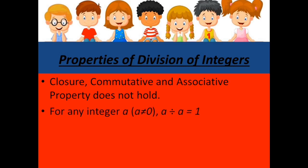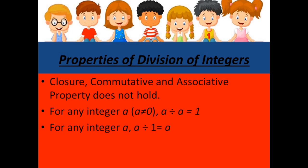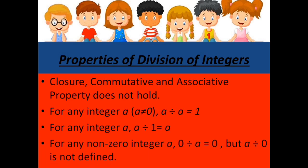We learnt that on dividing any integer by itself, we will get 1 as our answer. Then, on dividing any integer by 1, we will get the integer itself. And we learnt that on dividing 0 by any integer, we will get 0. But we cannot divide any integer by 0 — if we do so, we will get our answer as not defined.